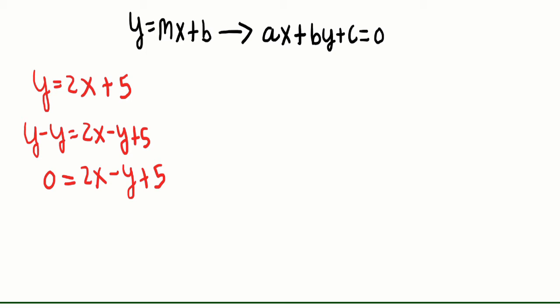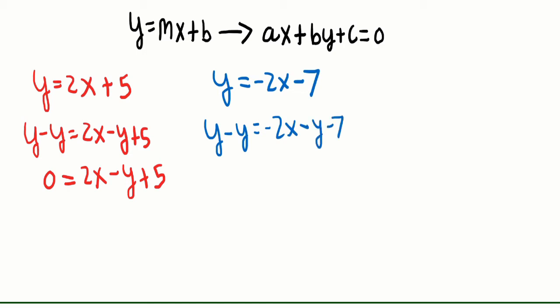Remember, when you're writing an equation in standard form, make sure that you have your X, Y, and then C value, just in that order. For our next example, we have Y equals negative 2X minus 7. Again, we have to move our Y to one side. So we have Y minus Y equals negative 2X minus Y minus 7, which gives us 0 equals negative 2X minus Y minus 7. But this time we don't have an equation in standard form because our A value is actually negative — it's not positive — and we always have to have a positive A value.